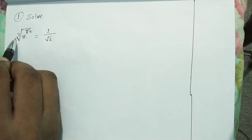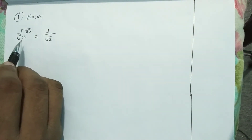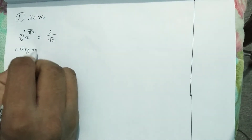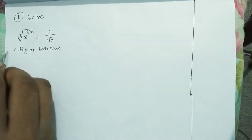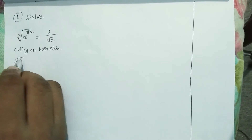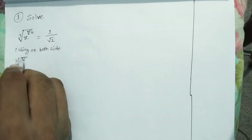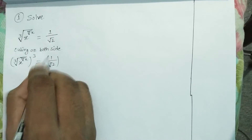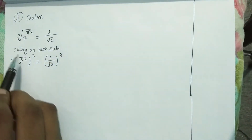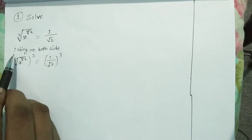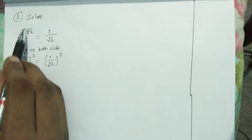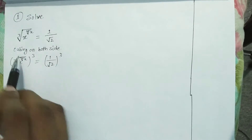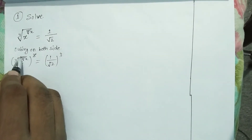We have a cube root here, so to remove this cube root we have to cube both sides. Cubing on both sides: cube root of x raised to power fourth root of x, all to the power cube, is equal to 1 by root 2 to the power cube. Now this power 3 and the cube root will cancel each other.